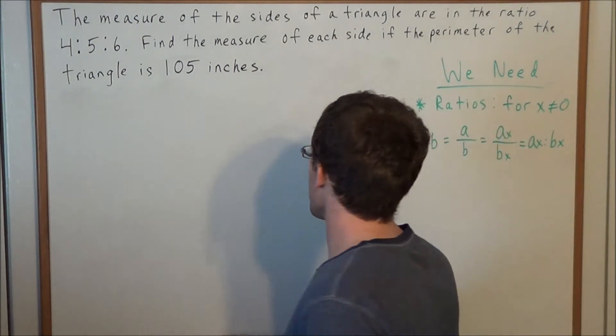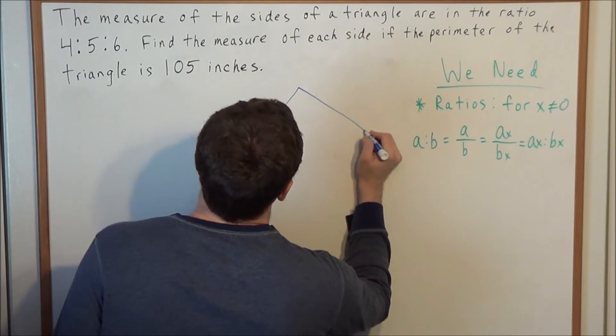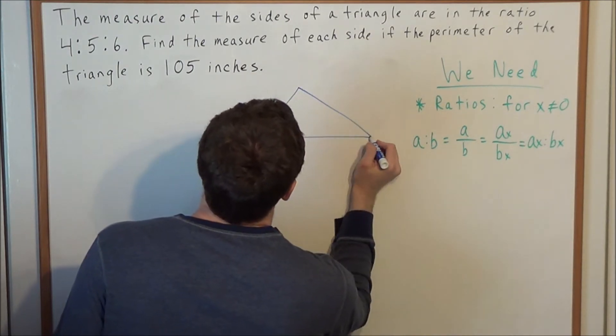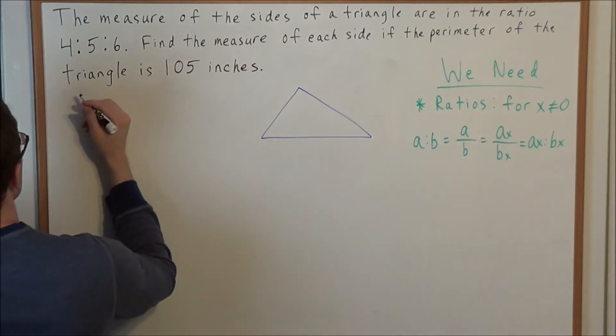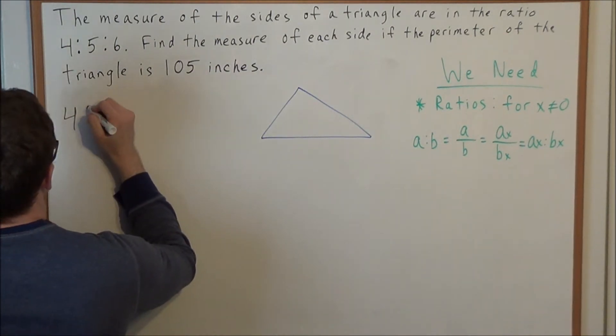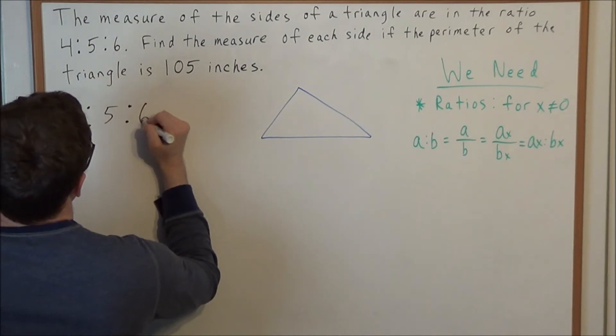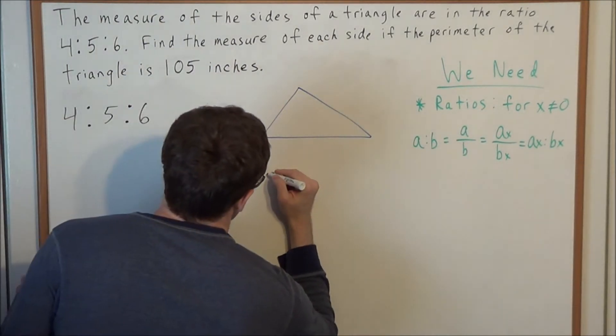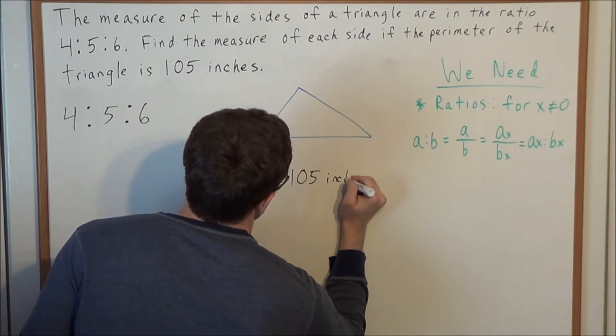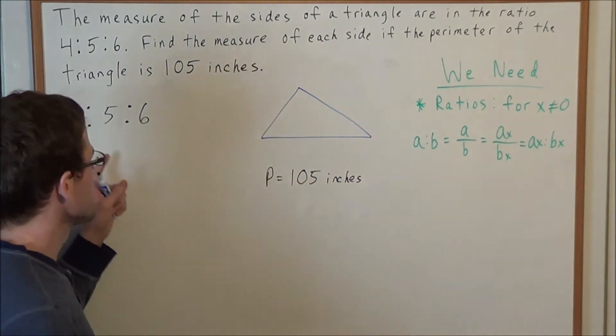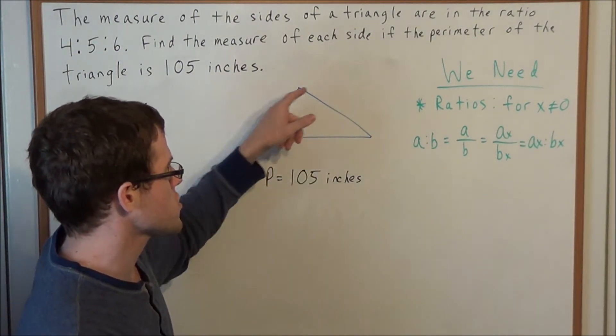Right now all we have in this problem, we're looking at a triangle and we know two things. The sides hold a ratio of 4 to 5 to 6, and the perimeter equals 105 inches. We need to combine these two pieces of information to find the lengths of the sides of this triangle.